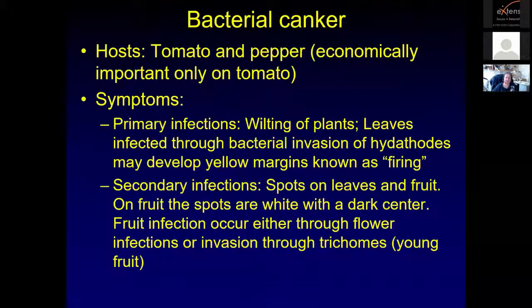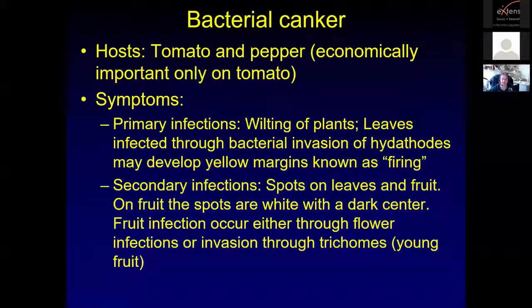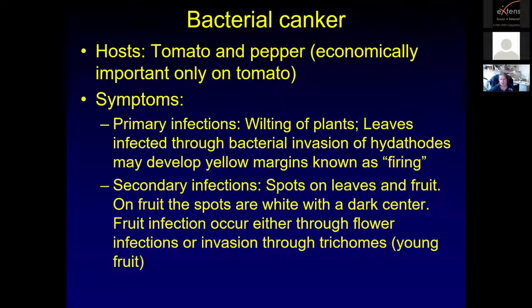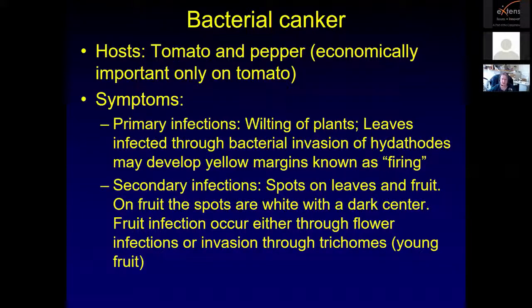Bacterial canker occurs occasionally in Utah on both tomatoes and peppers, but economically it is only important on tomatoes. Primary infections cause plants to start wilting; leaves are infected through bacteria invading openings like hydathodes or stomates, and they may develop yellow margins known as firing. Usually in Utah I see secondary infections — spots on leaves or fruit. On the fruit the spots are very distinct: white with a dark center. Fruit infections occur either through initial flower infections or through the invasion of trichomes, which are hairs on the young tomato fruit.